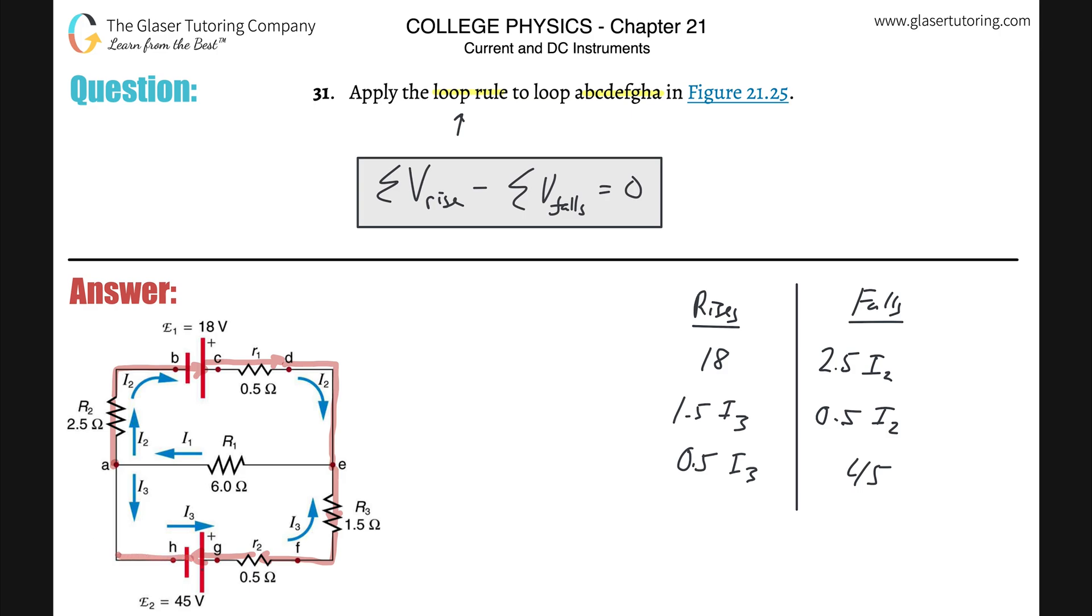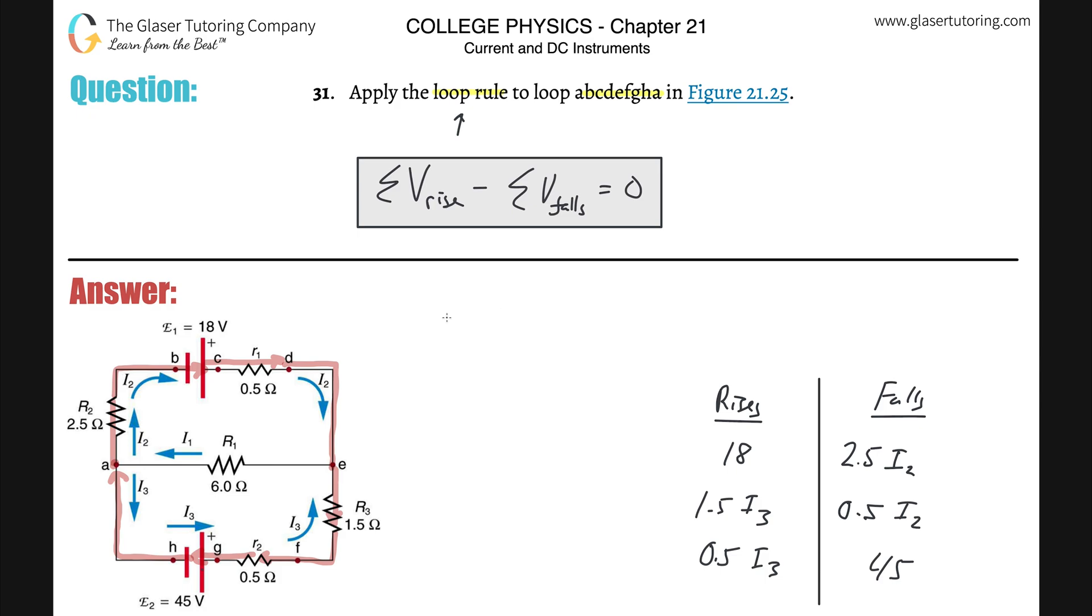And now you're going to keep on going and you're going to keep on going and you're going to realize, nothing happens until we get back to A. So you're done. You applied the loop rule. Now, all that needs to happen here is all you now have to do once you identify the rises and the falls, all you have to do is plug it into your formula appropriately. So the sum of all of the rises, I'm going to use like a bracket, you're going to take all of your rises, 18, and then you're going to sum them together, plus then 1.5I3, plus then 0.5I3. And then you're going to subtract the sum of all of the falls. So plug in all of the falls. So you got 2.5I2, plus you're going to add them together, 0.5I2, plus then 45. And that's all going to equal zero. And this is now an applied loop rule.